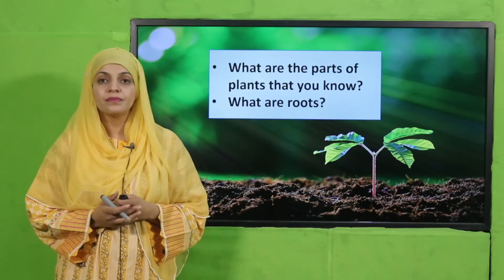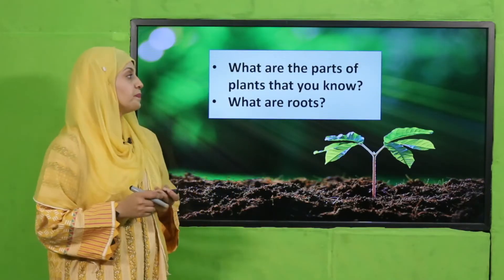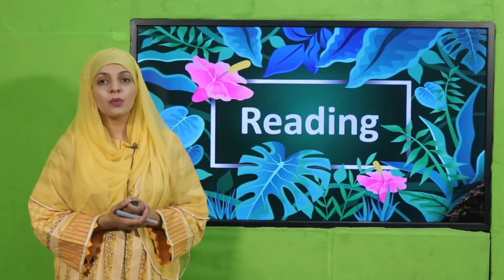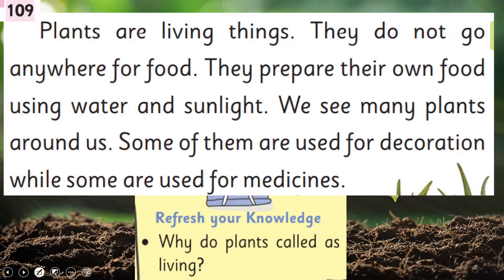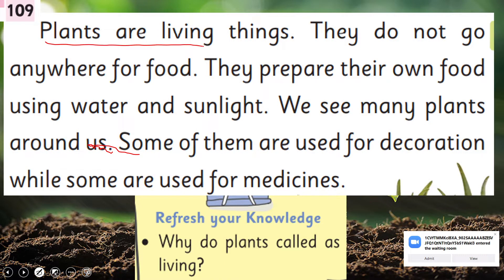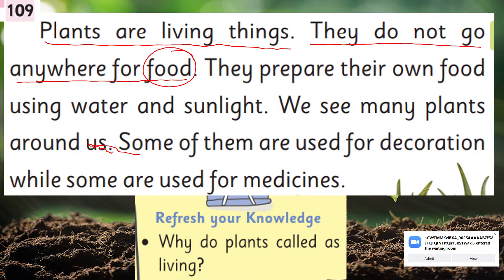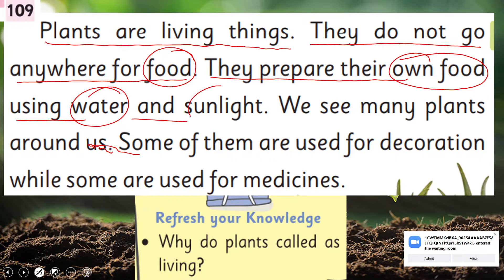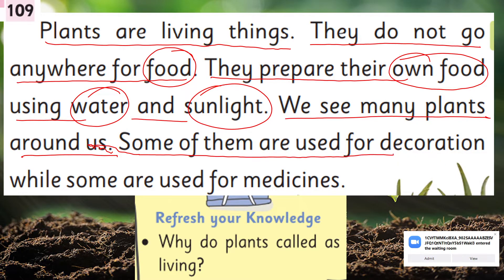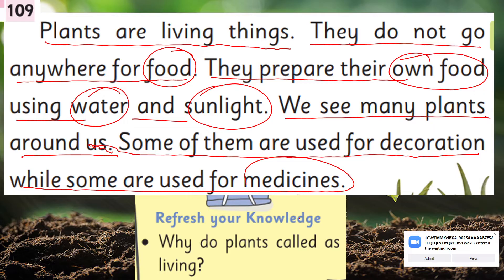Roots are the underground part of the plant. Now is the time for reading — please open page number 109 in your GK2 books. Follow along: Plants are living things. They do not go anywhere for food; they prepare their own food using water and sunlight. We see many plants around us — some are used for decoration while some are used for medicines.